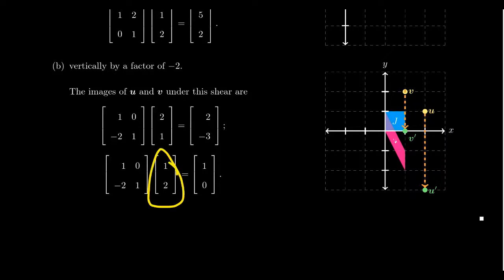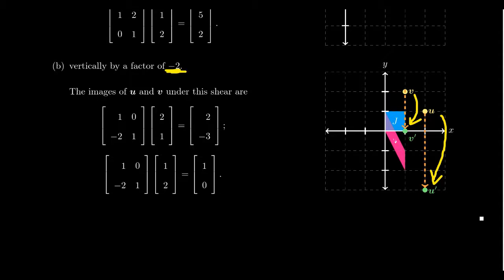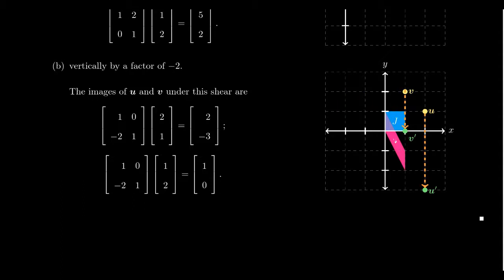For vector v = (1,2): multiplying by the first row gives back 1 — the x-coordinate stays at 1. The second row gives negative 2 plus 2, which is 0. So (1,2) moves down to (1,0). Notice: v moves 2 units down while u moves 4 units down, because u is twice as far from the y-axis as v. Things move down because we're doing a negative shear. If you were to the left of the y-axis, you would actually be moving upward proportional to how far left you are.